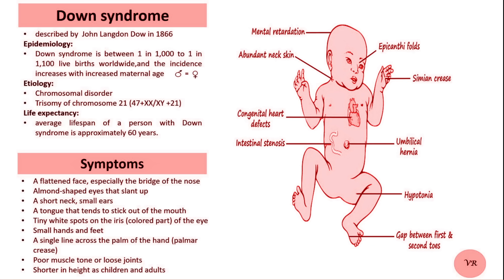There are three main types that can lead to Down syndrome. The first is Trisomy 21, which accounts for 95% of cases. The second is Mosaic Down syndrome, accounting for 1-2% of cases. The third is Translocation Down syndrome, which accounts for the remaining cases.